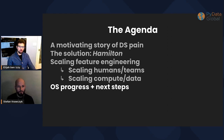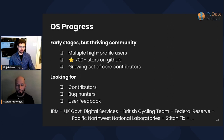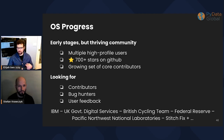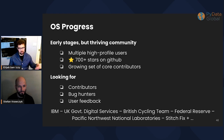So how is the open source work going? Where are we next? Open source progress: early stages, but a thriving community. We have multiple high-profile users — IBM, UK Government Digital Services, British Cycling Team, Federal Reserve, Pacific Northwest National Laboratories, Stitch Fix, and a bunch more that we didn't list here.